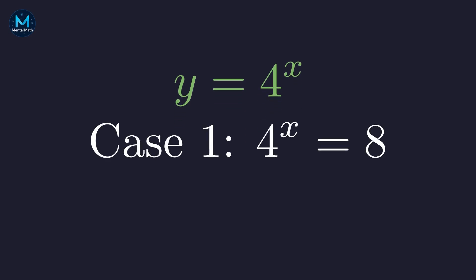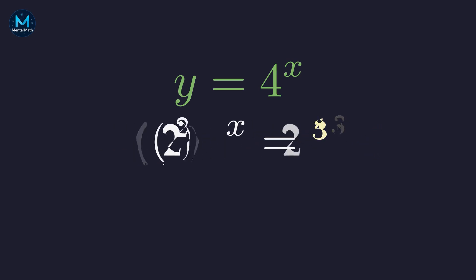First case, 4 to the x equals 8. To solve for x, let's express both sides with the same base. Both 4 and 8 are powers of 2. 4 is 2 squared. 8 is 2 cubed. Using the power rule,